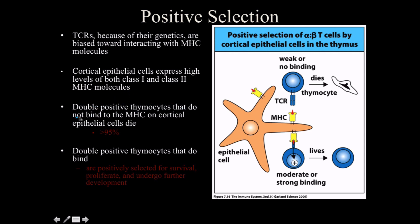Double positive thymocytes that do not bind to the MHC molecules on cortical epithelial cells are going to die — and this is a lot of them, about 95%. Double positive thymocytes that do bind are positively selected for survival. They're proliferating and going to undergo development.